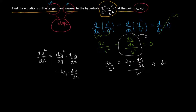Solving for dy/dx, the slope of the tangent is equal to x over y times b squared over a squared, i.e., dy/dx = (b²x)/(a²y). This is the slope of the tangent to the hyperbola.